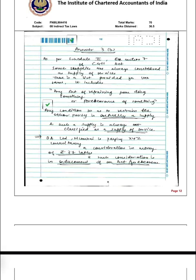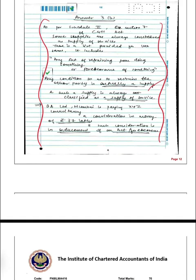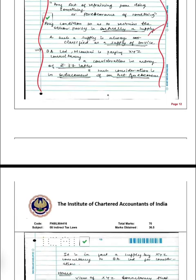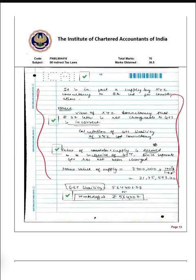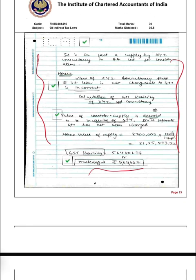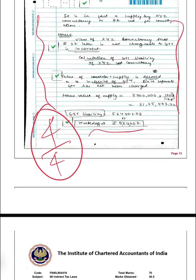The next question was based on supply — it was a forbearance. It wasn't an act but it was a forbearance, so I had a reference here to Schedule II: it's always a supply of service, and forbearance is also an act, so it will be treated as a supply. After that, there was a consideration of 37 lakhs — it was a calculation. The equation was completely correct, so I got 4 out of 4 marks.